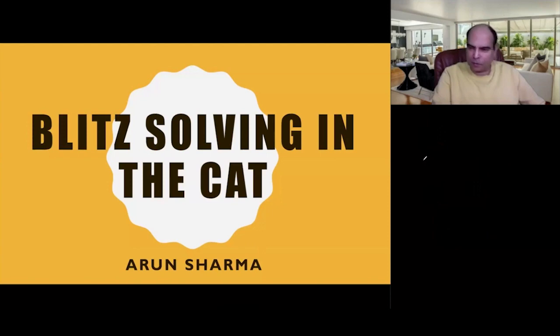One way to improve your speed is to solve two minutes per question instead of two and a half minutes, but that's not always possible. The other way to do it is what I refer to as blitz solving. If I'm a two and a half minute solver and I can do a specific question in 100 seconds instead of 150, that's blitz solving.